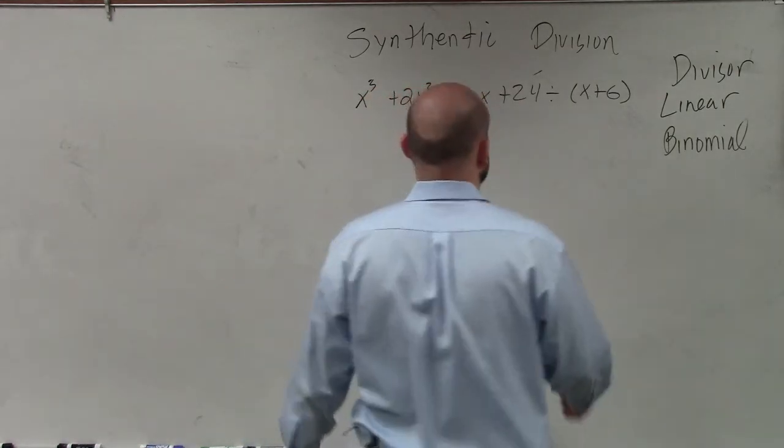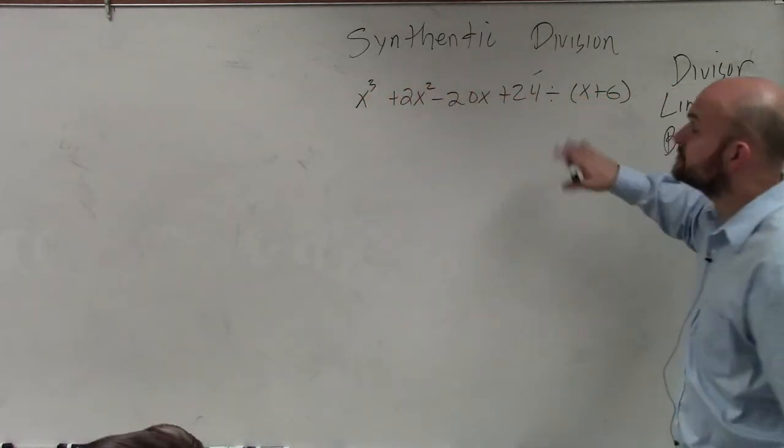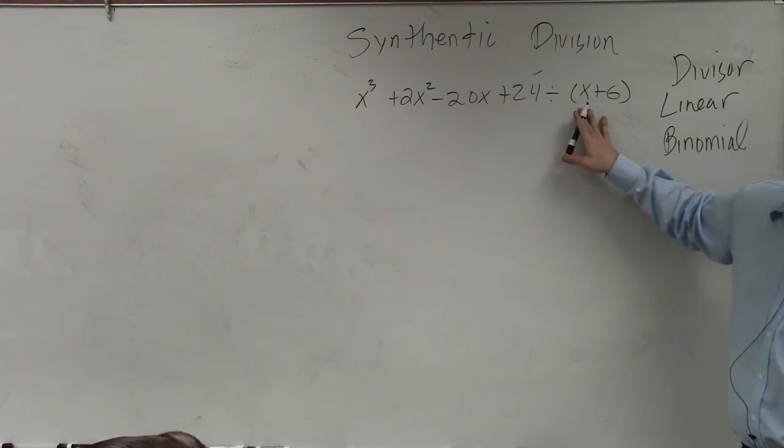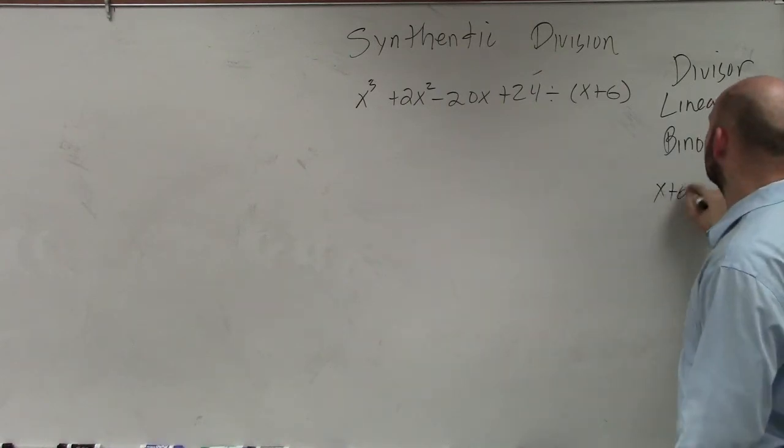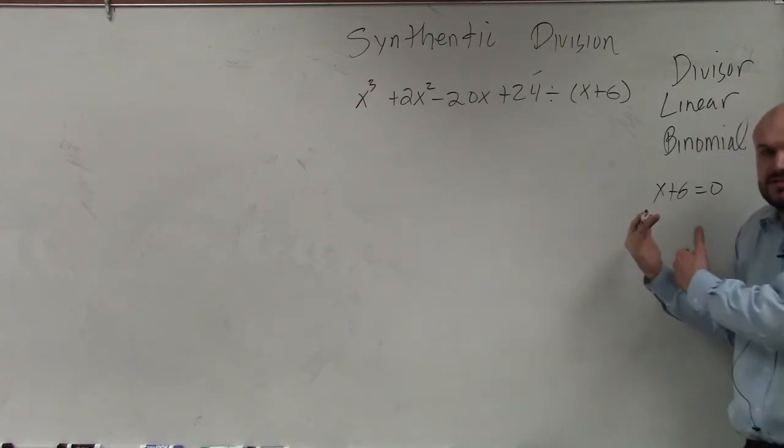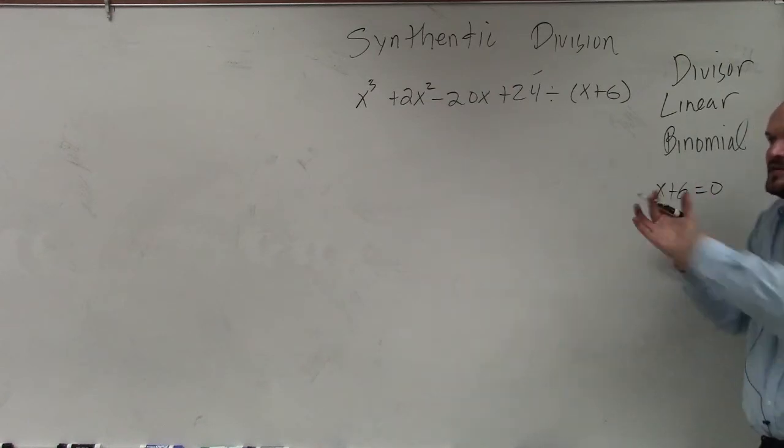Now, the next thing we want to do is, we want to identify the zero. So, what we do is, we take our factor, which is our divisor, and I just say, x plus six equals zero, right? That's how we go from factors to zeros. You set your factors equal to zero. Yes. Divisor must be linear, binomial? Yes.